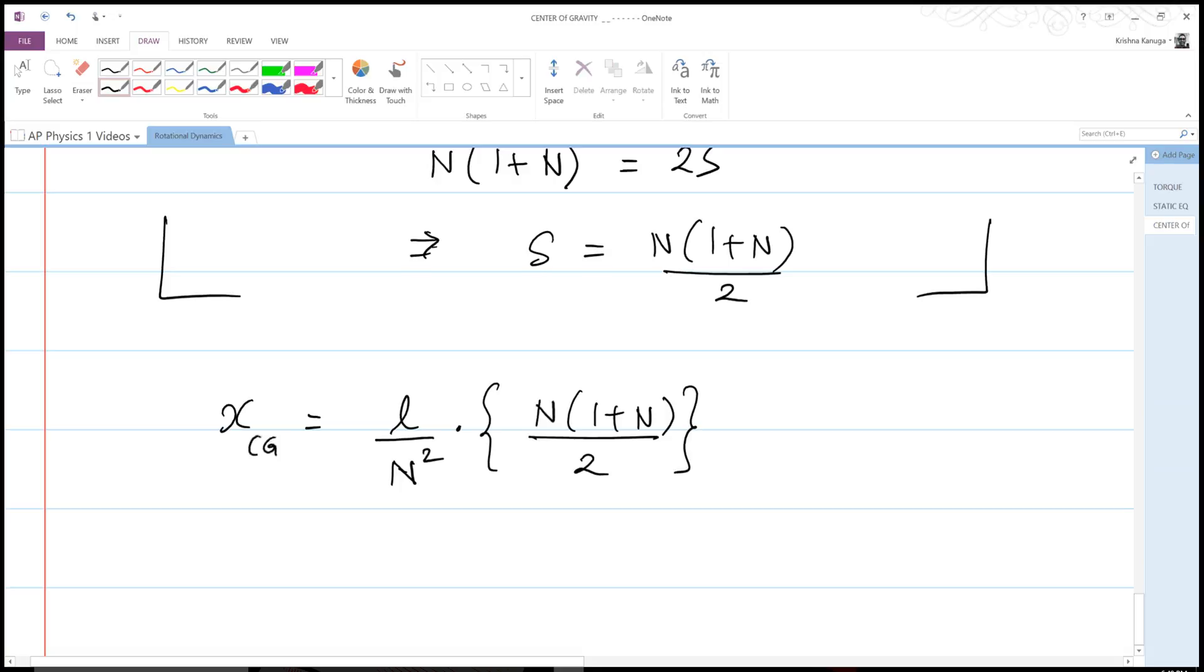Now we also know that this N is very very large, and if N is very very large, then we know that 1 plus N is simply equal to N. So therefore we have N times N, N squared here, we have an N squared in the denominator. Therefore, in the limit as N approaches infinity, our X center of gravity is simply going to be at L divided by 2.